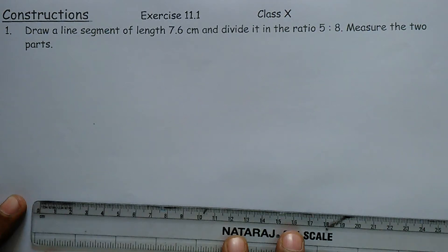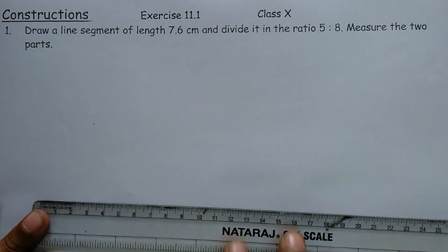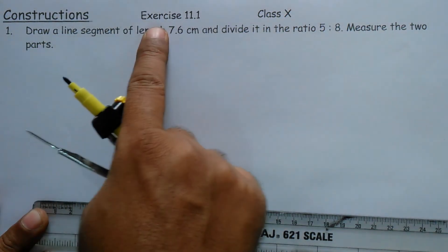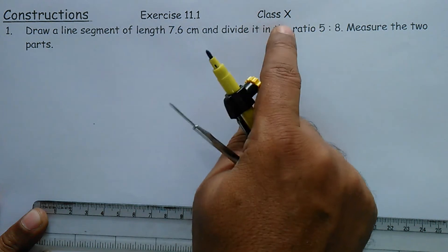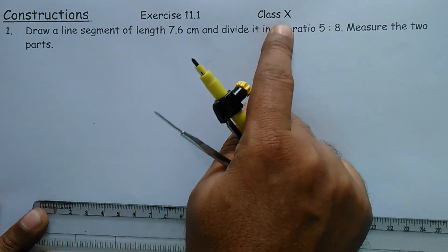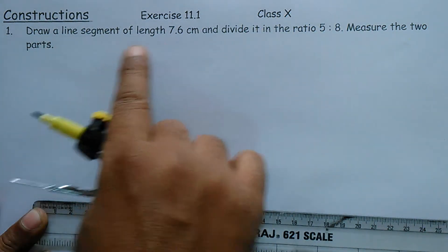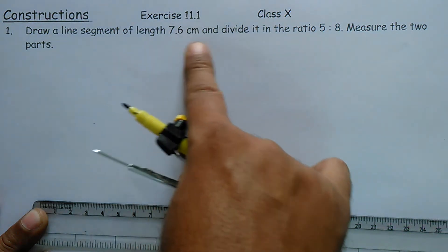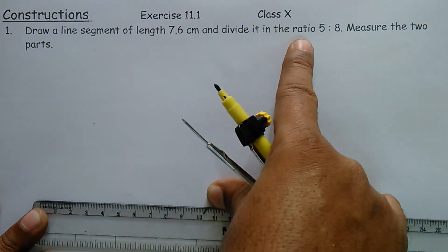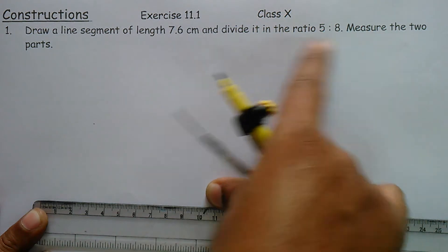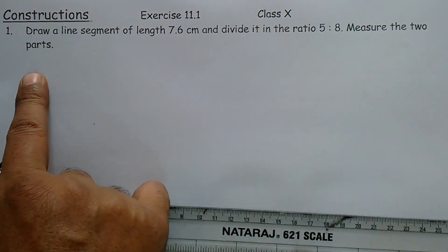Students, welcome to Math 24x7 Channel. Today our topic is Construction Exercise 11.1 of Class 10th. The first question is: Draw a line segment of length 7.6 cm and divide it in the ratio 5:8. Measure the two parts.